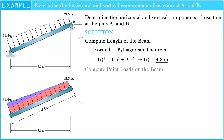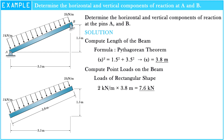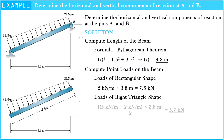Let's compute the point loads on the beam. First, let's compute the loads of rectangular shape: 2 kN per meter multiplied by 3.8 meters equals 7.6 kN. After that, let's compute the loads of the right triangle shape: 5 kN per meter minus 2 kN per meter, multiplied by 3.8 meters divided by 2, equals 5.7 kN.